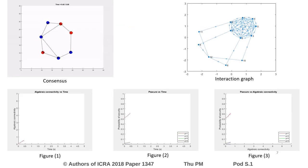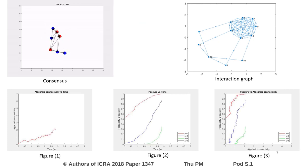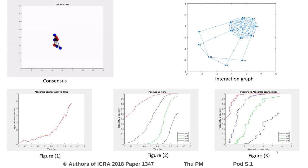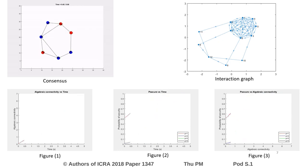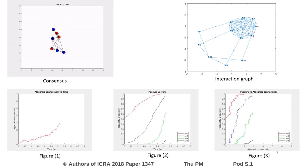Finally, we choose to simulate a multi-robot system performing consensus. The complete interaction graph is shown to the right, and all other interaction graphs must be subsets of this graph. As expected, algebraic connectivity increases with time, as seen in Figure 1. Since connectivity of the graph is increasing, the probability of security is also expected to increase, as seen in Figures 2 and 3. It is important to note that different curves represent the probability of security from a different number of attackers.